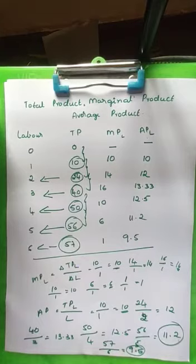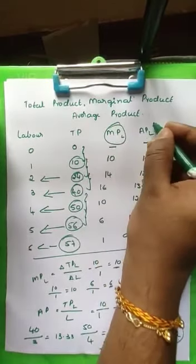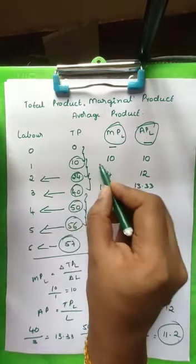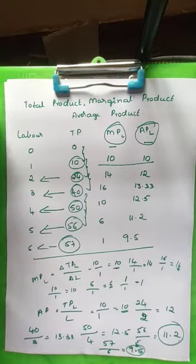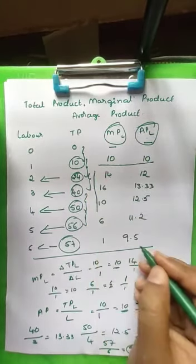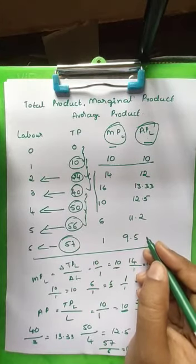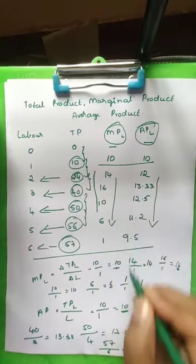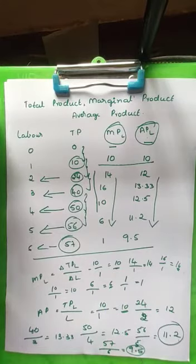In the exam, for 4 marks they will give you the total product and ask you to find out the marginal product of labour and average product of labour. When the output is at the start, the marginal product and average product are equal at 10. As output goes on increasing, the average product gets reduced and the marginal product of labour also gets reduced. This is about the calculation of total product, marginal product, and average product.